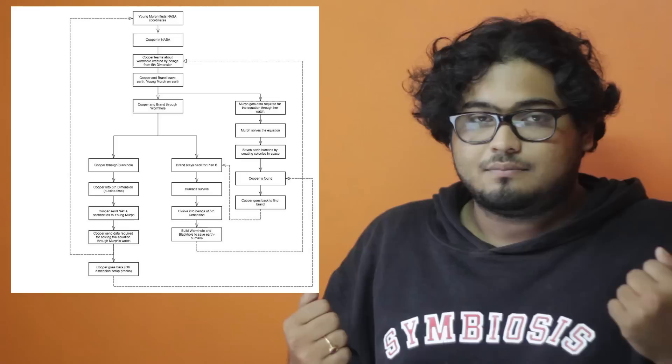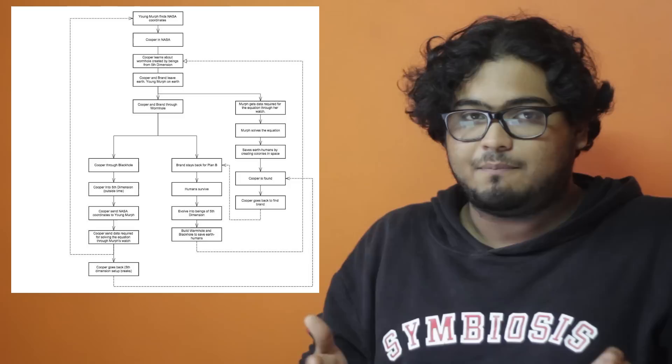When Cooper falls into that tesseract at the end of the movie, he's actually telling his daughter what to do, and these events are going to bring him back there. So it's a loop, and in Interstellar there are about three particular loops which all intersect in certain places. My friend Anand has made a flowchart which explains all the interlinking between these three loops — it makes Interstellar a lot simpler to understand. Links in the description below.